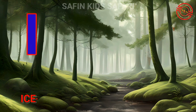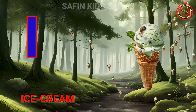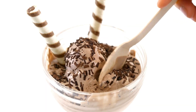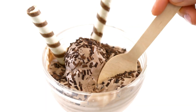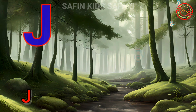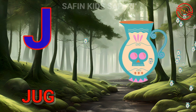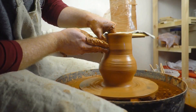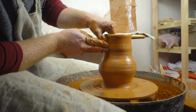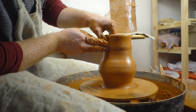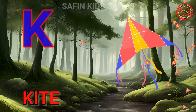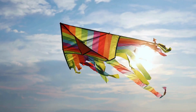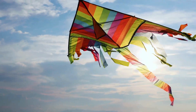I for ice cream, wow ice cream. J for jug, nice jug. K for kite, nice kite.